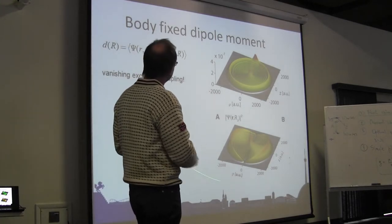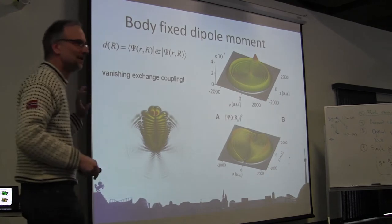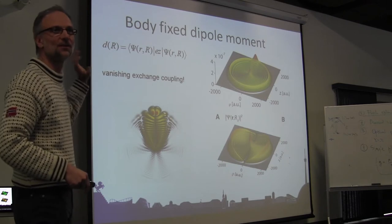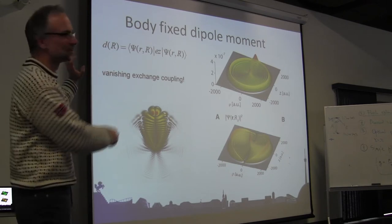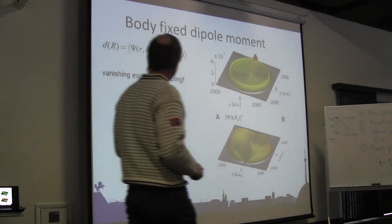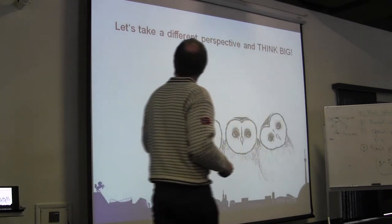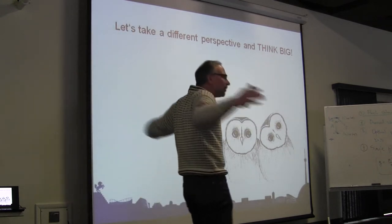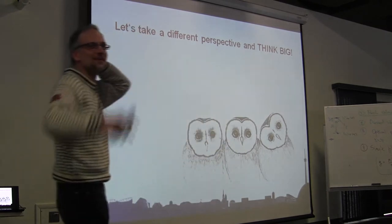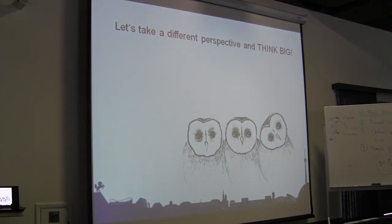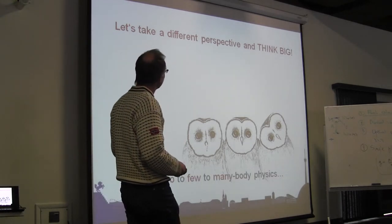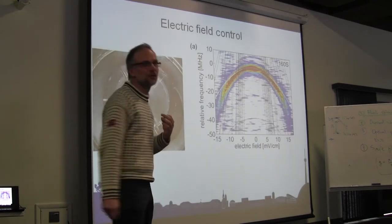These molecular states look fancy, but you should always remember that for the things we are doing, it is a small effect — it produces just a little blip. Now let's take a new perspective and think big: make Rydberg atoms as large as possible. There are some heroes who have already done this. The experimental tool you need in order to get there is electric field control.